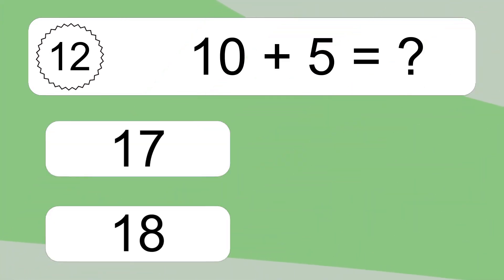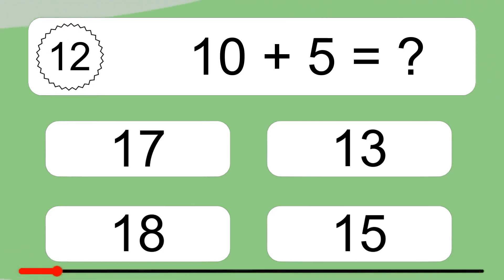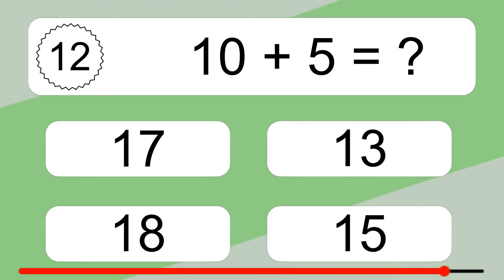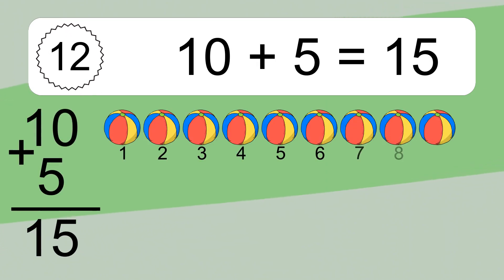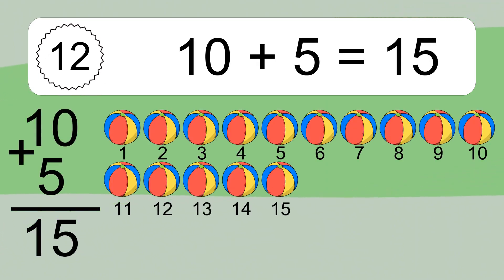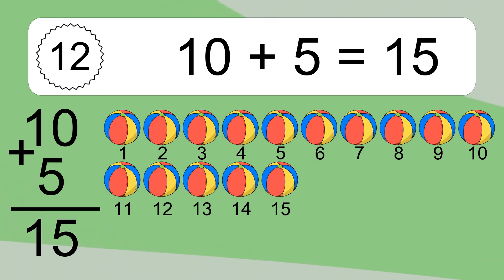10 plus 5 equals 15. Let's count it: 1, 2, 3, 4, 5, 6, 7, 8, 9, 10, 11, 12, 13, 14, 15.